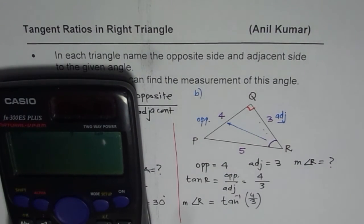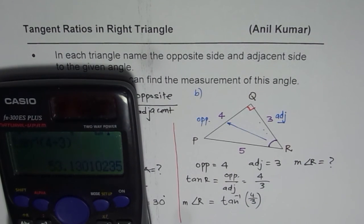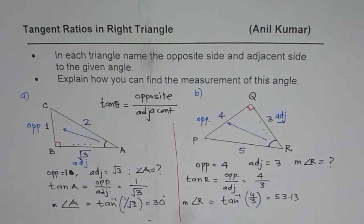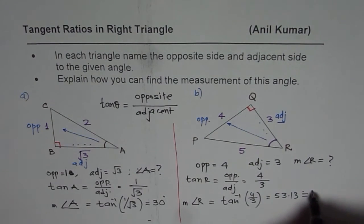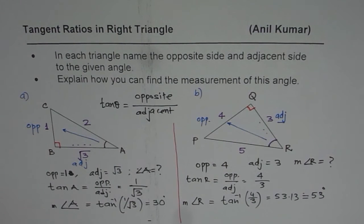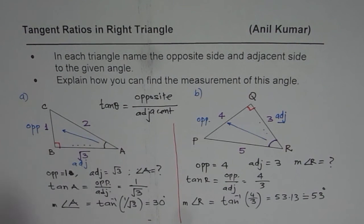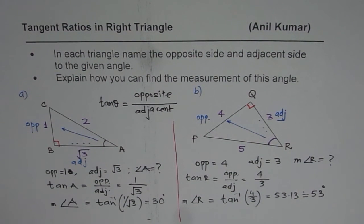Using Shift and the second operation on the calculator — tan inverse or inverse of any trigonometric ratio is obtained by pressing Shift and then the function — we get 53.13 degrees. Rounding to whole numbers, angle R is approximately equal to 53 degrees. I hope this helps you understand how in a right triangle we can find the tangent ratio and use it to find the angle. Once you find one angle, you can always find the other as 90 minus that angle, and in that way solve the complete triangle. Thank you and all the best.